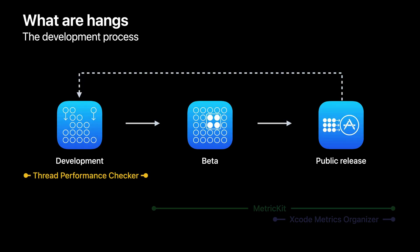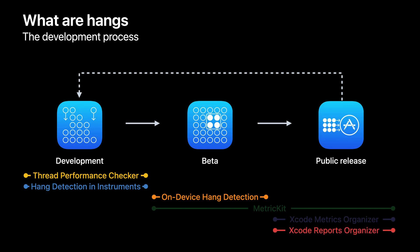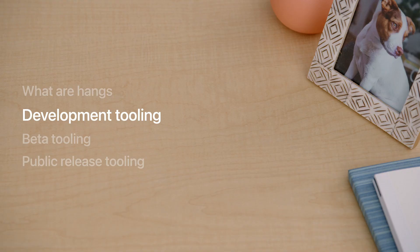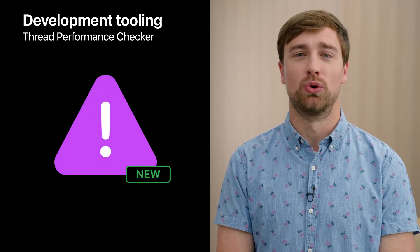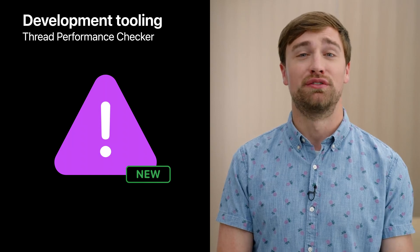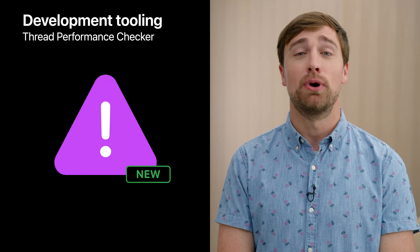The thread performance checker in Xcode alerts you to hang-causing threading issues while debugging your app without actively tracing it. Instruments in Xcode now detects and labels hangs while tracing your app. On-device hang detection provides hang detection without using Xcode or tracing, providing real-time hang notifications and supporting diagnostics while using your development signed or TestFlight app. And finally, the organizer in Xcode now supports hang reports, which provides aggregated hang diagnostics from users in the field.